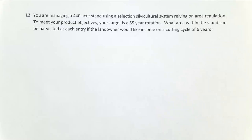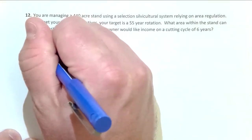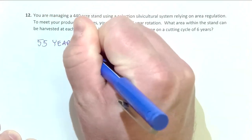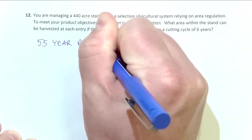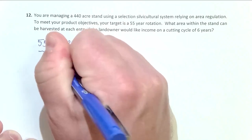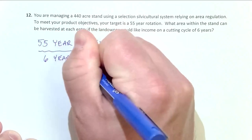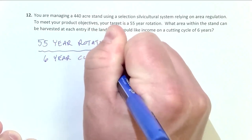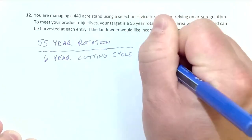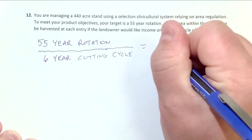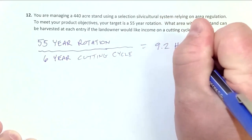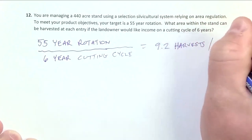To start this problem, I have a 55-year rotation and I want to come in and cut every six years — a six-year cutting cycle. If I did that, I would be getting 9.2 harvests per rotation.